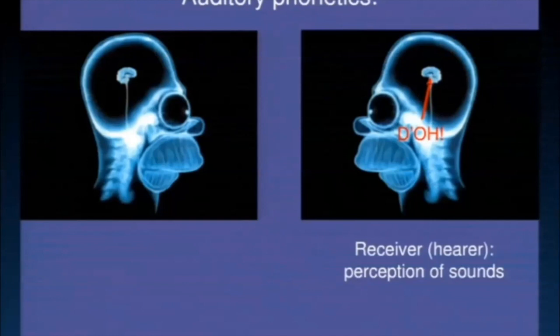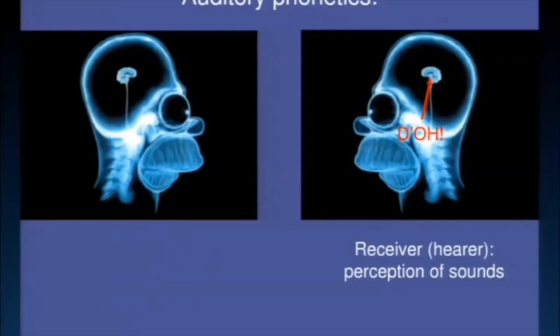Moving on to auditory phonetics — now that the airwaves have made their way from me to you, they arrive at your ear. They go through the ear canal. There's something which looks a bit like a snail, the so-called cochlea. It's processed there and put into electrical signals that are processed in your brain. Very complex stuff, which is why we're setting that aside a bit.